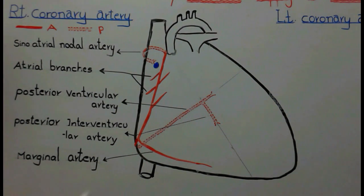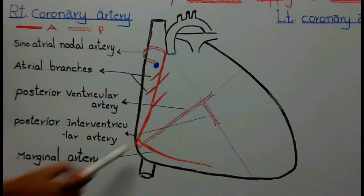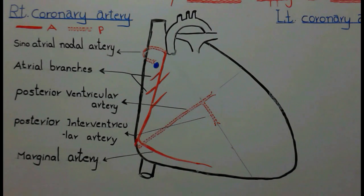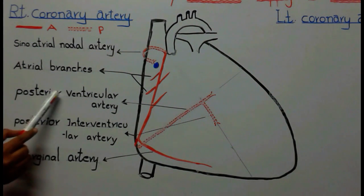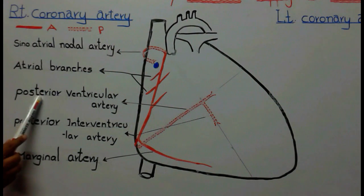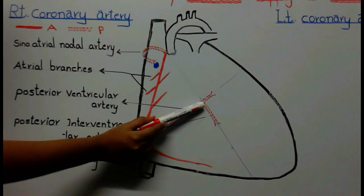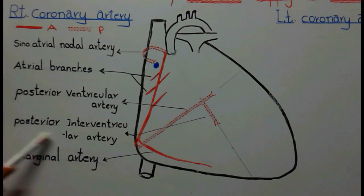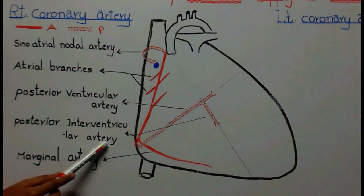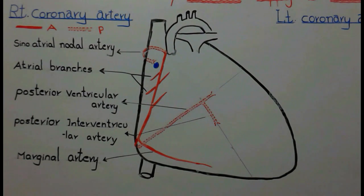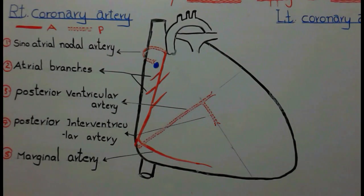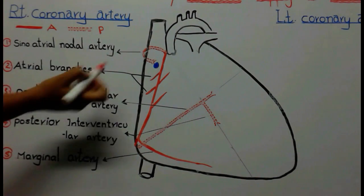The artery then goes backwards and gives two main branches. The first is the posterior ventricular artery, which supplies the posterior part of the right ventricle. The second is the posterior interventricular artery, which supplies the posterior part of the interventricular septum. These are the main branches of the right coronary artery and their course.